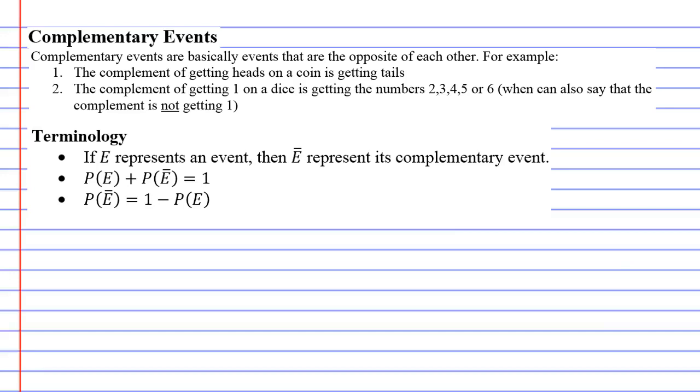So we're looking at what is called complementary events, and complementary events are basically events that are the opposite of each other. For instance, the complement of getting heads on a coin is getting tails. They're the opposite of each other. Now, there is a little bit more to it than that.